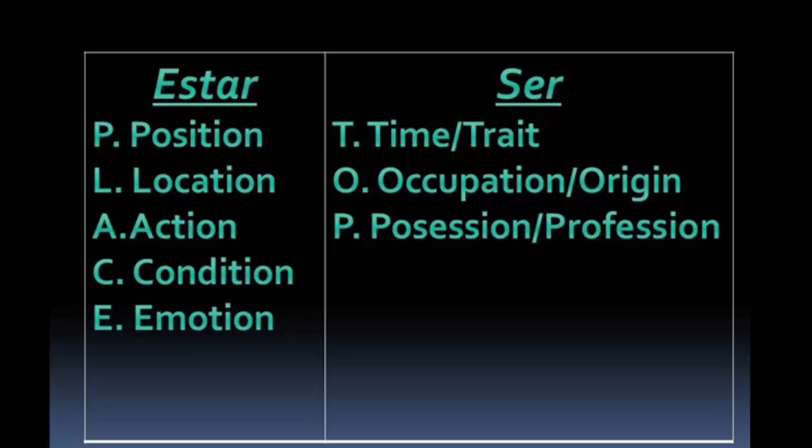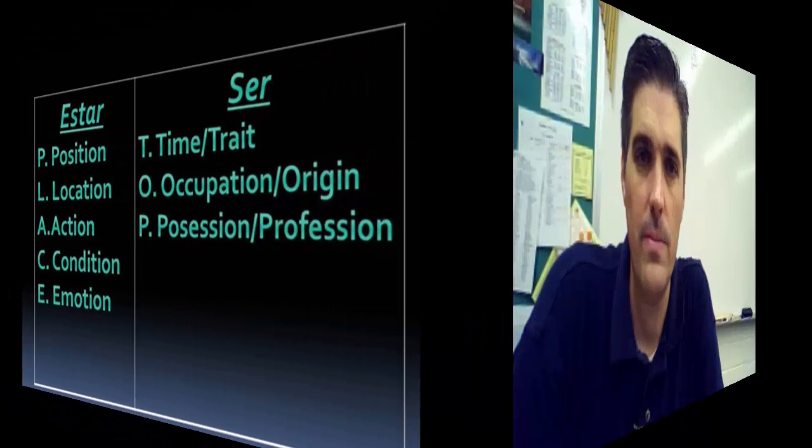Ser: we use TOP — T-O-P. That's for time or trait. For example: son las dos, son las tres, es la una. Occupation or origin — soy profesor, él es ingeniero. Origin: soy de California, ella es de Nueva York. Possession, profession: esta blusa es de ella — it belongs to her.